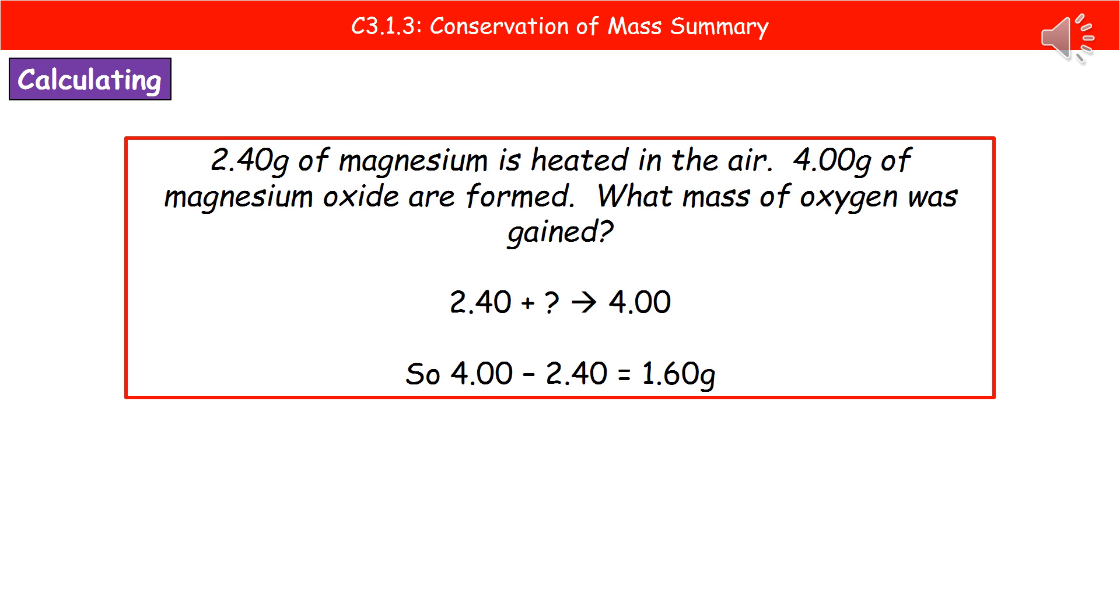So we know that the actual mass that we start with with our reactants must be the same as the mass of our products. So if we think about what we're starting with, we've got our magnesium and our oxygen. And from that, our only product is magnesium oxide.